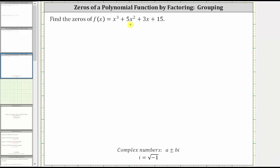We're asked to find the zeros of the given cubic function. The zeros are the x values, or inputs, that give a function value or output of zero. Which means to find the zeros, we set the function equal to zero and solve.